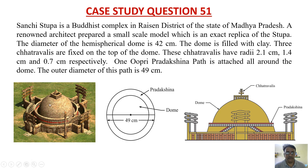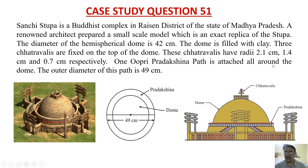The dome is filled with clay. Three chatra valleys are fixed on the top of the dome — one, two, three — as shown in the figure. These chatra valleys have radii 2.1 centimeter, 1.4 centimeter, and 0.7 centimeter respectively. One upri pradakshina path is attached all around the dome, and the outer diameter of this path is 49 centimeters. Based on this context, questions are framed.